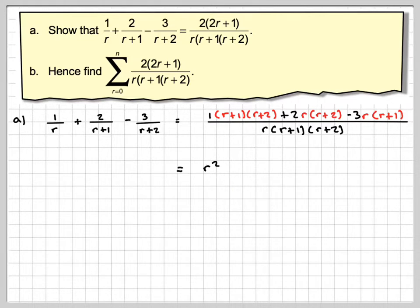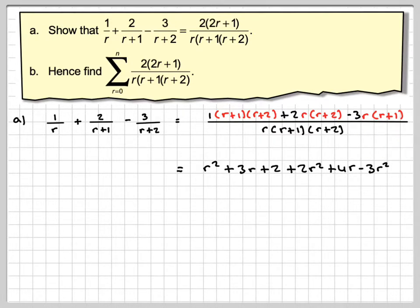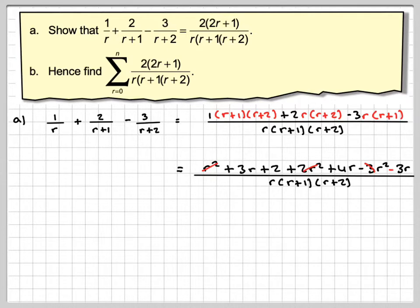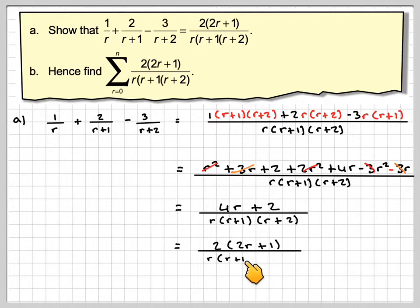Multiplying out, we get r²+3r+2, then 2r²+4r, minus 3r²-3r. Be very careful with the signs over the same denominator. The r² and 2r² cancel with the minus 3r², and 3r and minus 3r also cancel out. So we're left with 4r+2 in the numerator, which has a common factor of 2, giving us 2(2r+1) / [r(r+1)(r+2)].